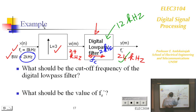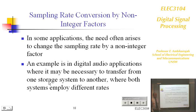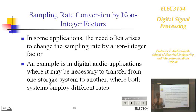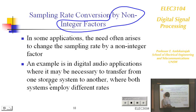So far, decimation and interpolation have been done by integer factors — downsampling by 2, upsampling by 4. But in practice, you may need a non-integer sampling rate conversion. If a non-integer factor is required, how do you achieve that?